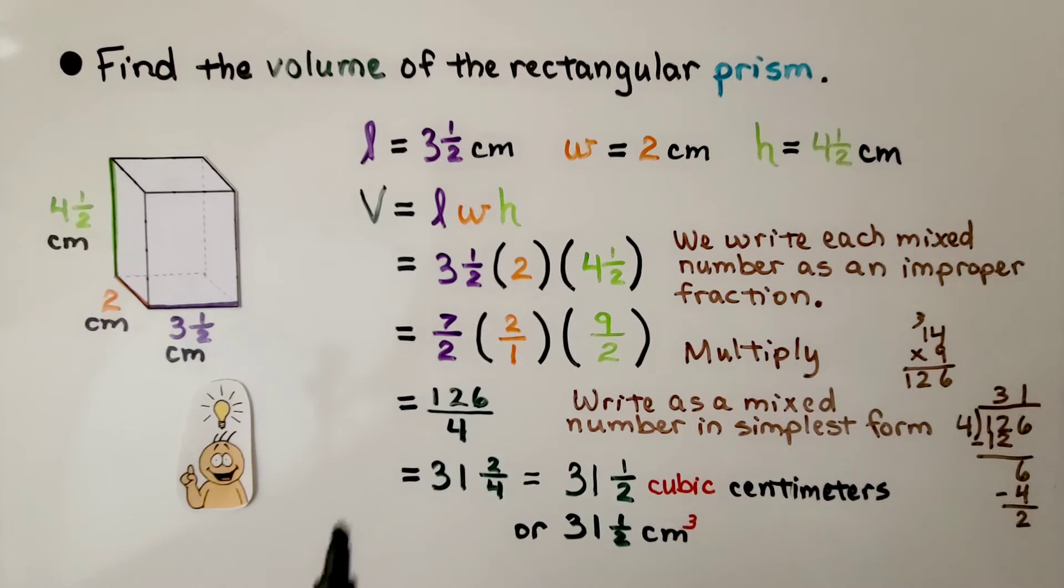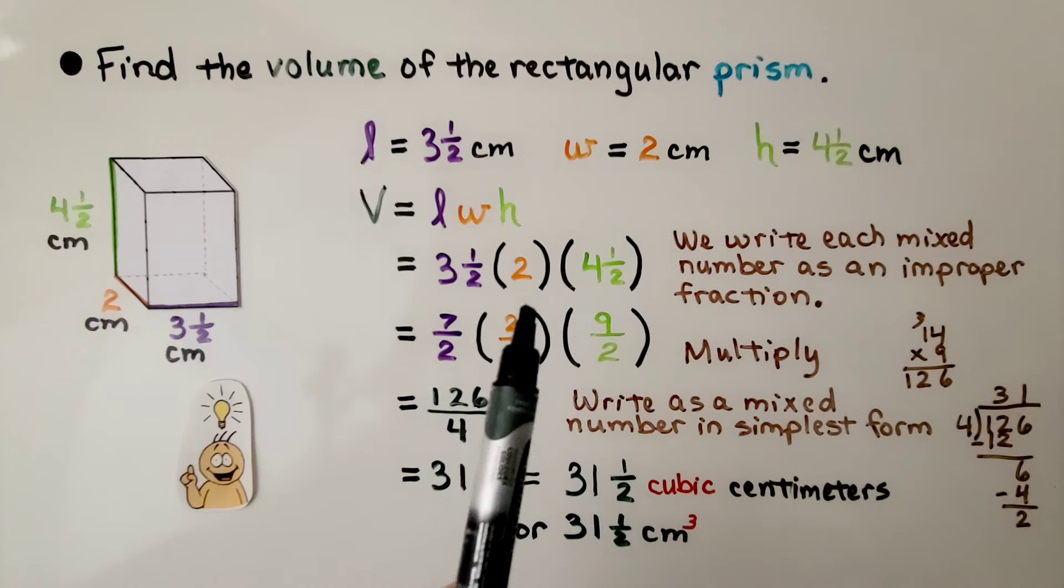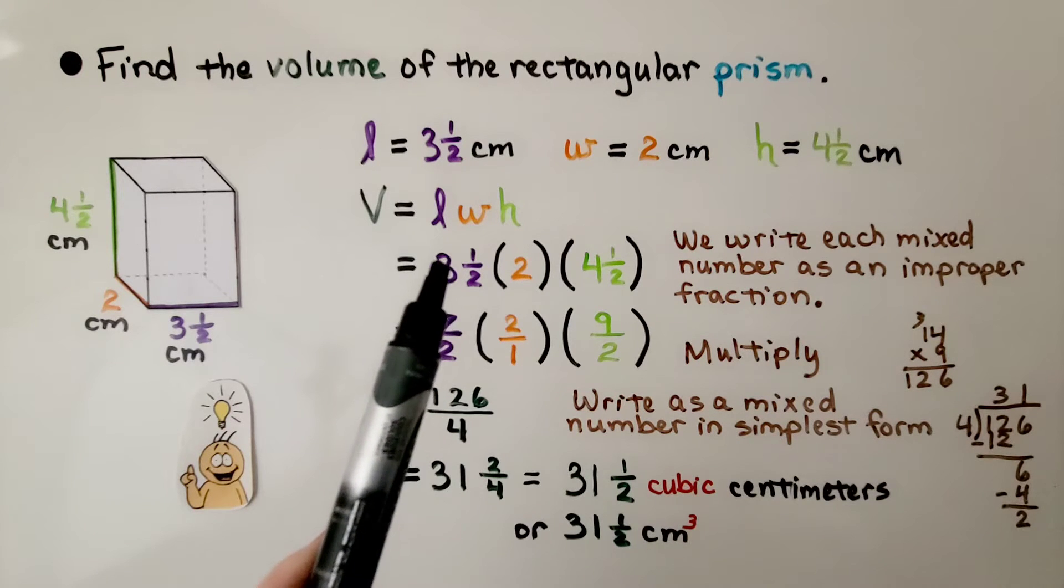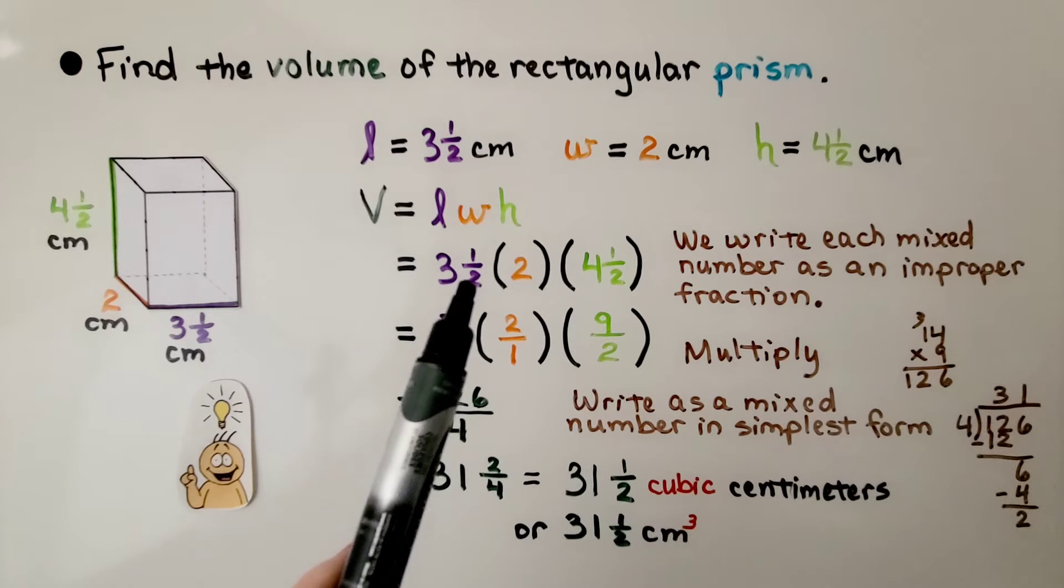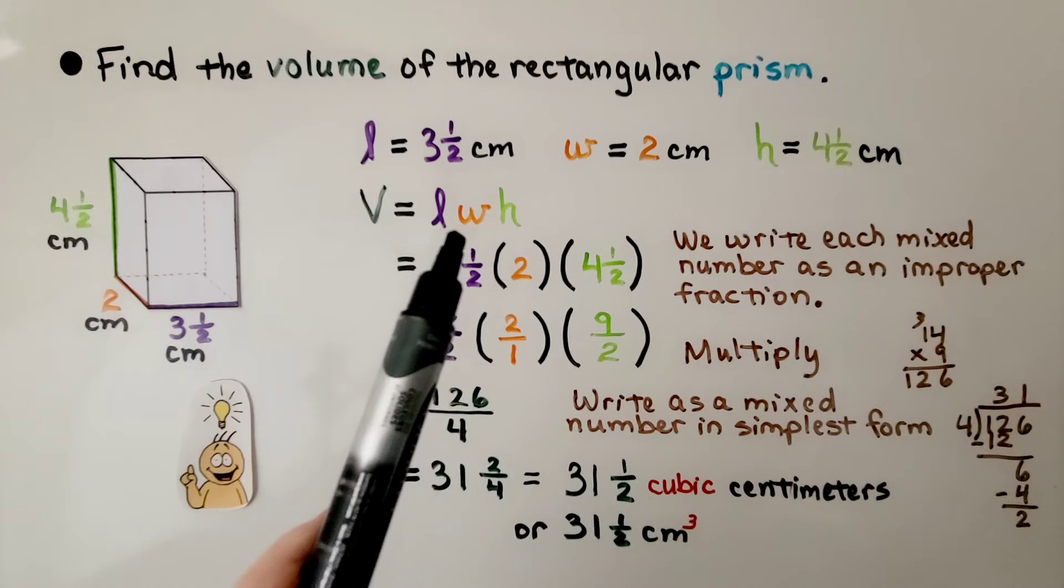Now, because we have mixed numbers here, we write each mixed number as an improper fraction in order to multiply them together. We do three times two, the denominator is six, and we add that one numerator, so it's seven halves.